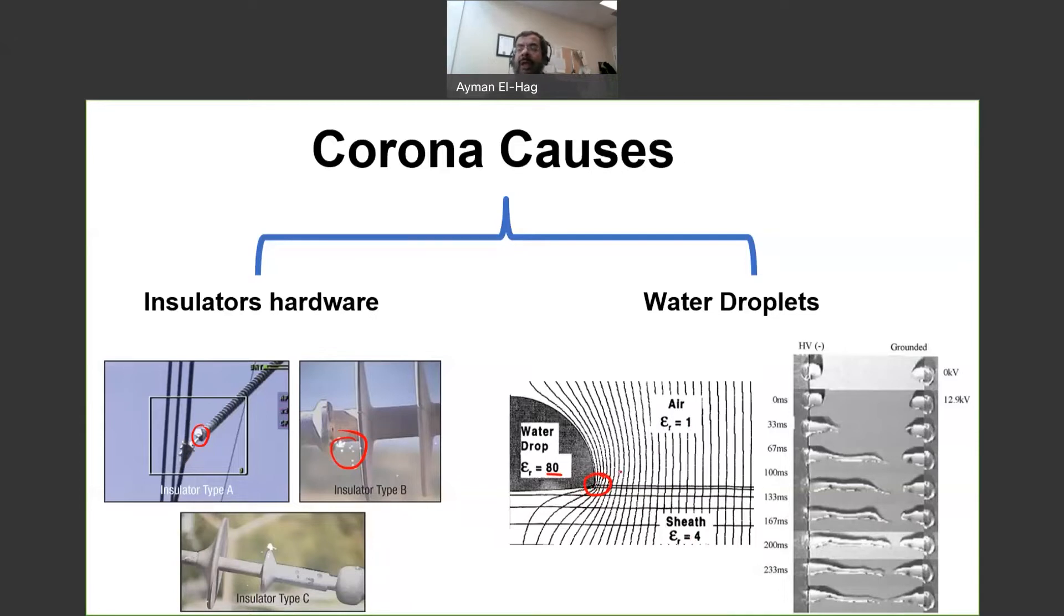Now this Corona can be evolved to an arcing. In this photo we apply two water droplets, 0 kV, and then at 12.9 kV you start here, you start to have sort of elongation of the water droplet. And this is because of the force that is generated because of the high electric field. And now this is the time. So as time progresses,